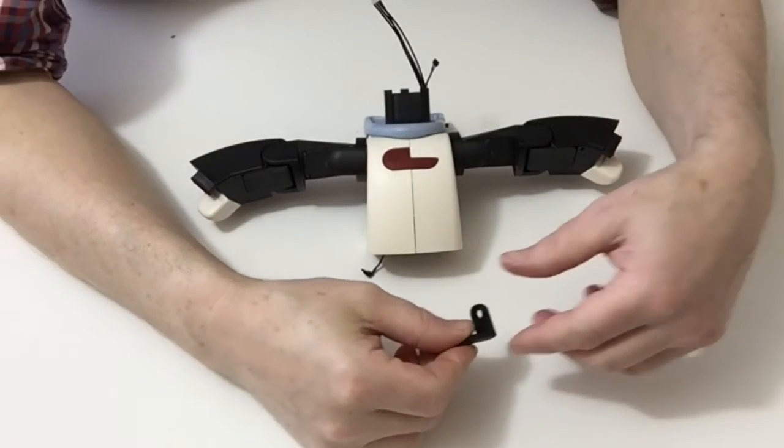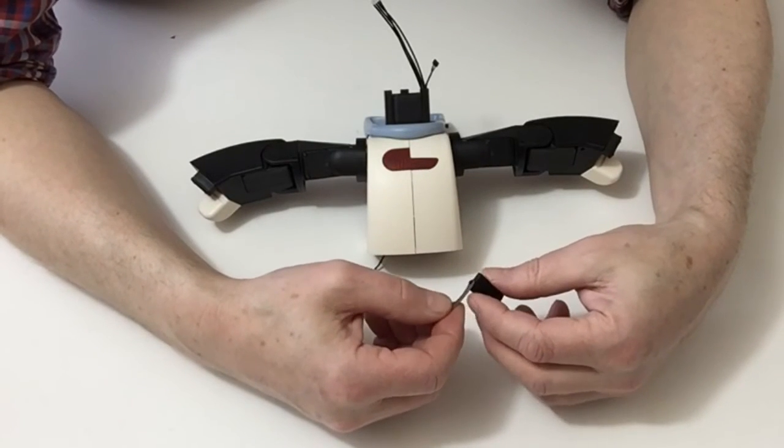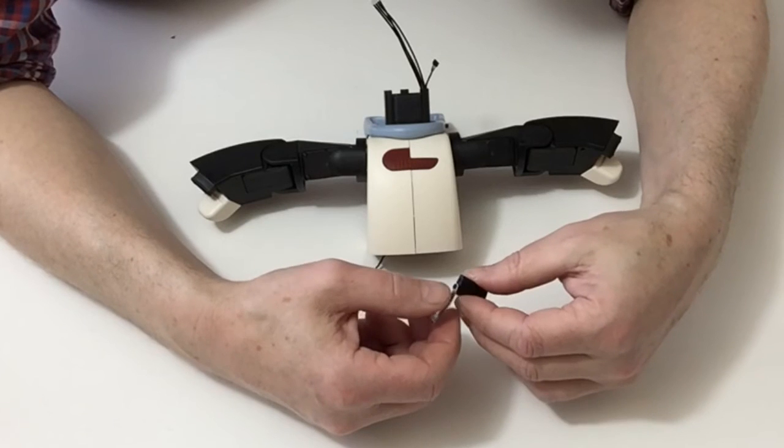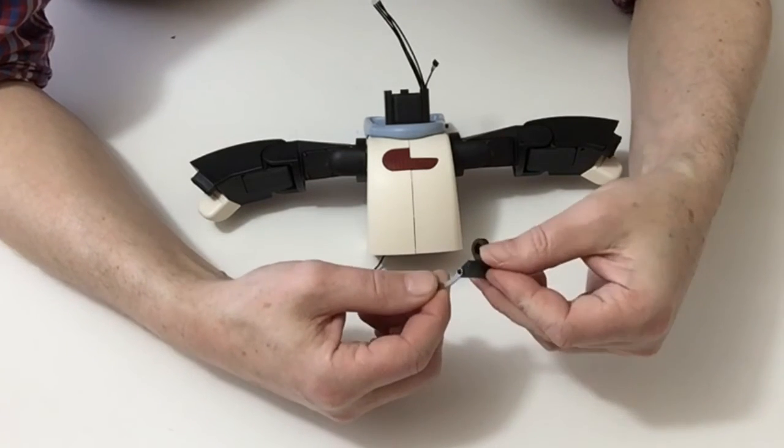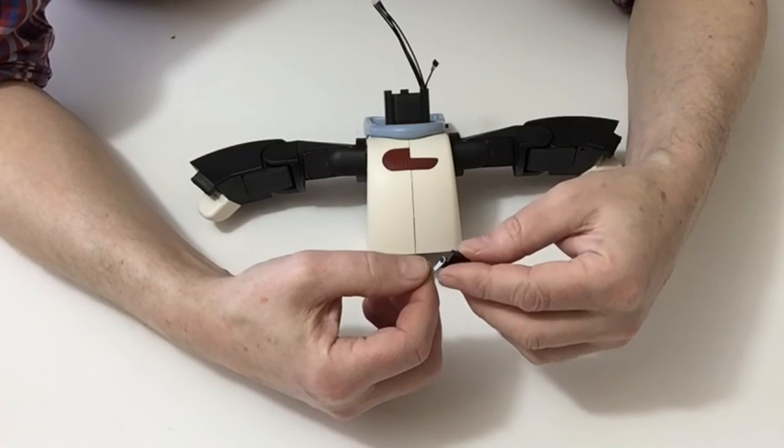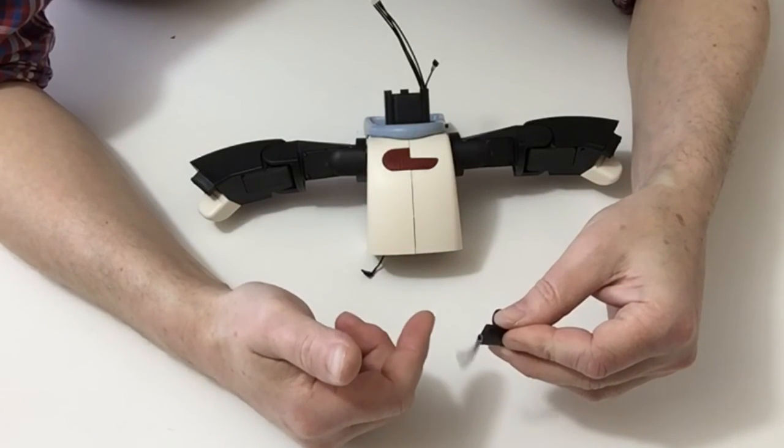Next take the servo horn and also take the neck plate and just notice that you have a countersunk side and that's the side that you need to put the screw through. So tighten that down but do not over tighten it because this needs to move like so.